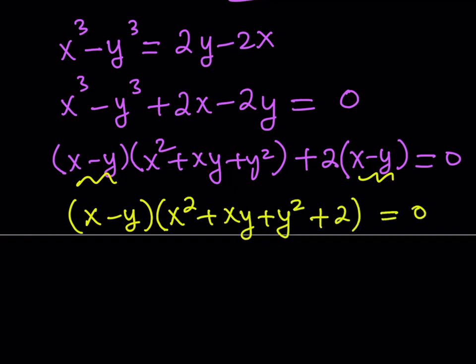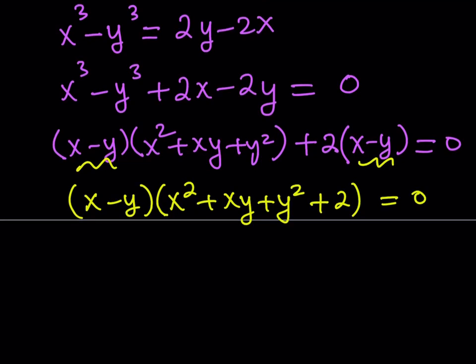Now, you might be thinking about this. We have two factors. And obviously, from zero product property, we're going to set each factor equal to 0 and go from there. The first factor is fairly easy to solve. The second one isn't that easy to solve, but we're going to handle that as well. So what does the first one give us? Well, x minus y equals 0 results in x equals y or y equals x.